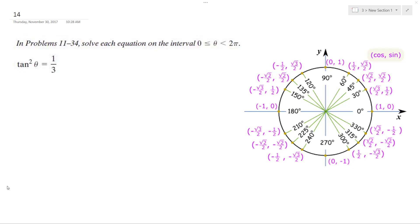All right, so what I have here is tangent squared theta equals one-third. I take the square root of both sides, so I end up with tangent theta is equal to plus or minus one over the square root of three.